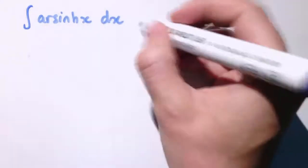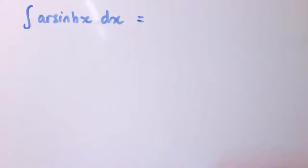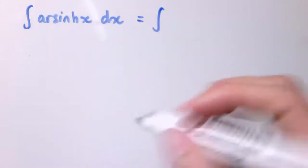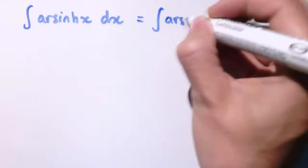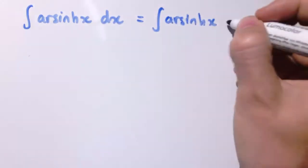I'm going to do it with arcsinh of x here. The method is much like when you learn to integrate ln x and we do it by parts. So I'm actually going to treat this like it's arcsinh of x times 1.